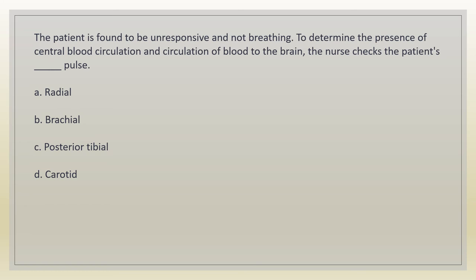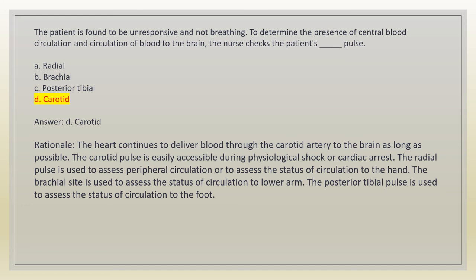The patient is found to be unresponsive and not breathing. To determine the presence of central blood circulation and circulation of blood to the brain, the nurse checks the patient's blank pulse. a. Radial. b. Brachial. c. Posterior tibial. d. Carotid. Answer: d. Carotid. Rationale: the heart continues to deliver blood through the carotid artery to the brain as long as possible. The carotid pulse is easily accessible during physiological shock or cardiac arrest. The radial pulse assesses peripheral circulation; brachial assesses lower arm; posterior tibial assesses circulation to the foot.